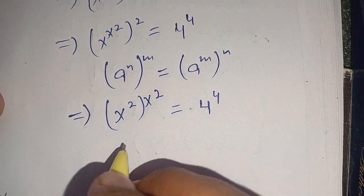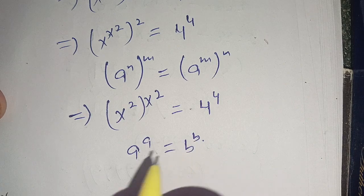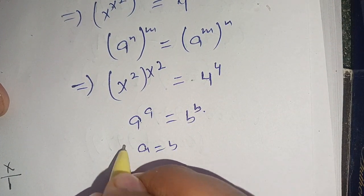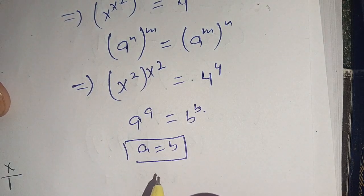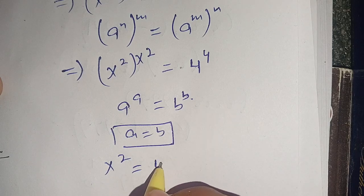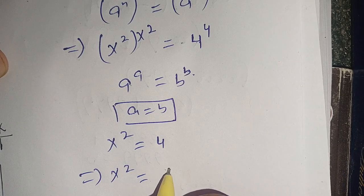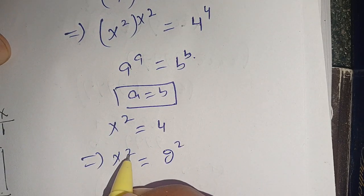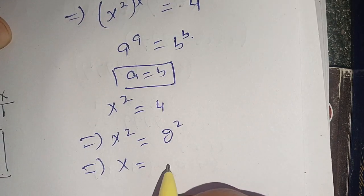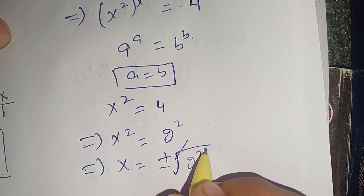This is now in the form a^a = b^b. When this identity holds, we can compare a = b. So we compare x^(x²) = 4, which implies x² = 4, meaning x² = 2². Shifting the square to the right-hand side, we get x = ±√(2²).